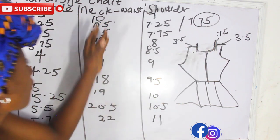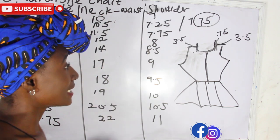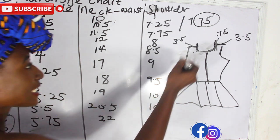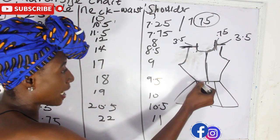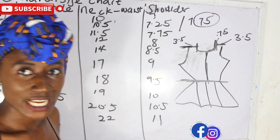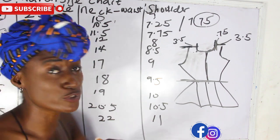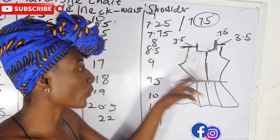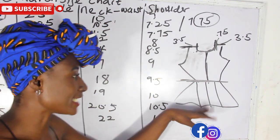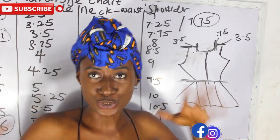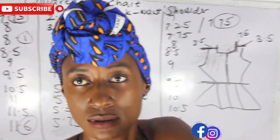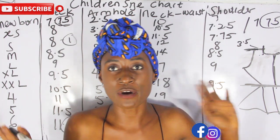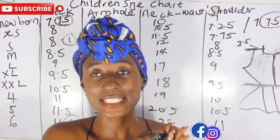For the neck to waist, this is measured from the shoulder down to the waistline. If you are making a ball dress, you need your shoulder to waist measurement — this gives you the bodice, and the lower part is where you attach your ball dress skirt effect.